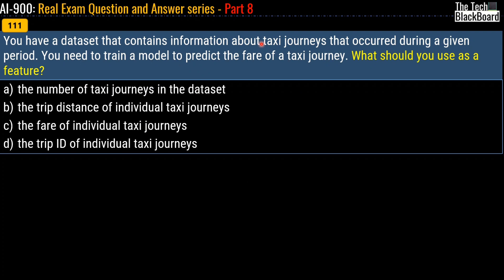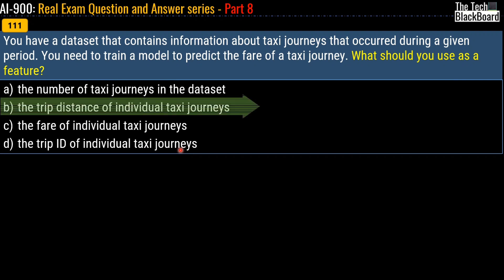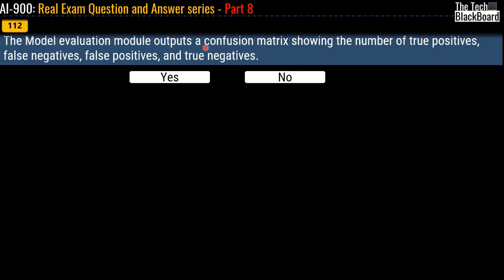Question 111: You have a dataset containing information about taxi journeys. You need to train a model to predict the fare of a taxi journey. What should you use as a feature? Options are: number of taxi journeys in the dataset, trip distance of the individual taxi journey, fare of individual taxi journeys, or trip ID of the individual taxi journey. The correct answer is option B — trip distance — because fare is relative to the distance between two points, not the trip ID, the count of journeys, or the fare itself (which is what we're predicting).